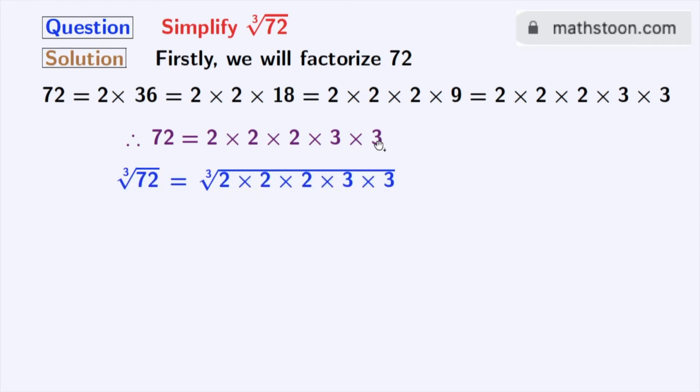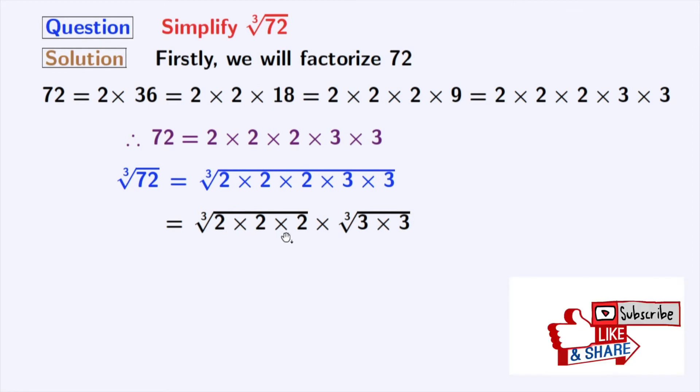Now taking cube root on both sides, we get cube root of 72 is equal to cube root of 2 times 2 times 2 times 3 times 3. After grouping we get cube root of 2 times 2 times 2 times cube root of 3 times 3.